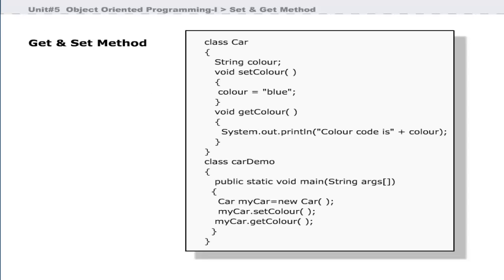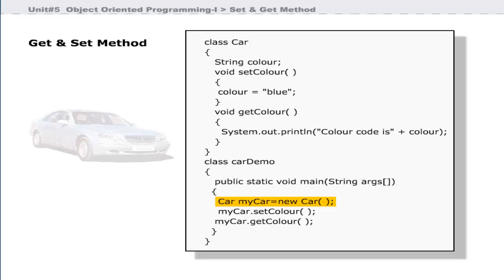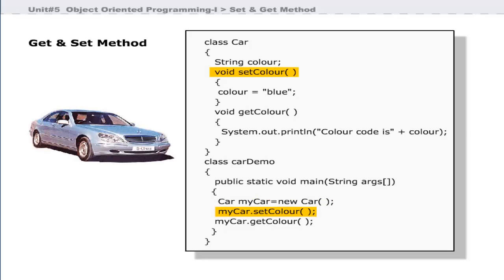The return type void indicates that this method will not return anything. The Car class defines two methods: set_color and get_color. The class CarDemo creates an object of the Car class. The default constructor of the Car class creates the object and assigns a null value to it. The set_color method sets the color of the instance variable of the myCar object, and the get method at line 19 prints the value of the instance variable.